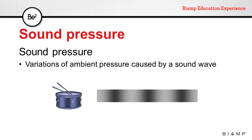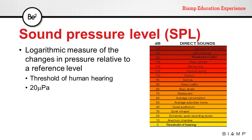Sound pressure is the variation of ambient pressure caused by a sound wave. When we measure sound pressure level, we use the dB SPL measurement. It's a logarithmic measure of the changes in pressure relative to a reference level. The reference for sound pressure level is the threshold of human hearing, that is 20 micropascals.